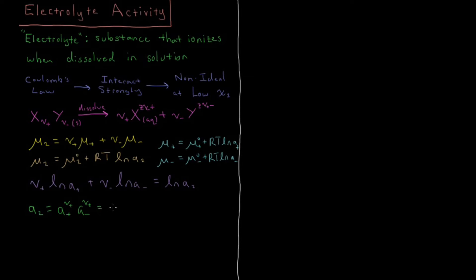This also equals the mean ionic activity a± to the power ν, where ν is defined as ν+ plus ν−. So the activity of the solute is each ion's activity raised to the power of its stoichiometric coefficient, and we define a± as the mean ionic activity, which is somewhat different from the activity of the solute itself.